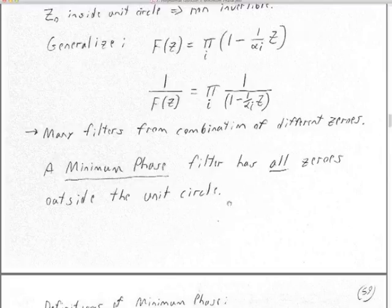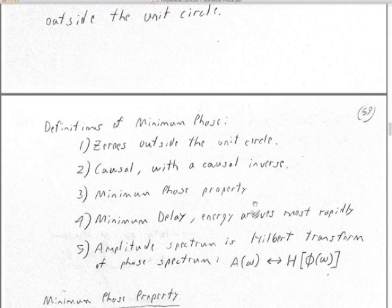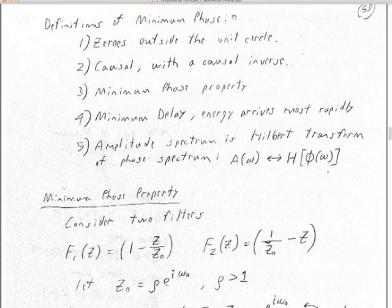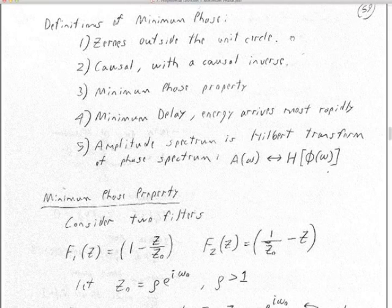Here's the first definition of what it means for a filter or time series to be minimum phase: a minimum phase filter has all zeros outside the unit circle. That's a very basic definition and it works for everything. Here are all the different definitions of minimum phase, and these are all equivalent — they are mutually necessary and sufficient. If any one of these properties is true, the other properties are also true. First, as we saw: all zeros outside the unit circle means minimum phase. Causal with a causal inverse also means minimum phase.